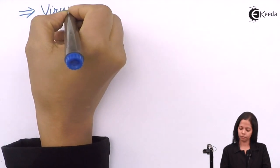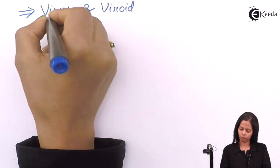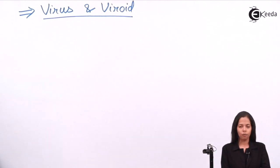The last topic which we are going to study of this chapter is virus and viroid. These are also organisms which are not included in five kingdom classification. First I will explain you virus then I will explain you viroid. Speaking about virus,